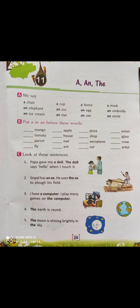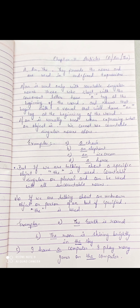In English there are three articles, that is A, An and The. A, An and The precede the nouns and are used in undefined expressions.